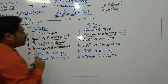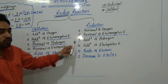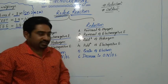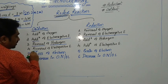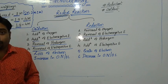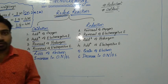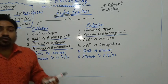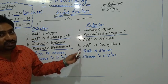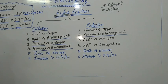Removal of hydrogen from a compound is also called oxidation, and the addition of hydrogen to a compound or element is called reduction. Similarly, removal of an electropositive element other than hydrogen — that is, metals, which are electropositive in nature — from a compound is called oxidation, while addition of an electropositive element is called reduction.